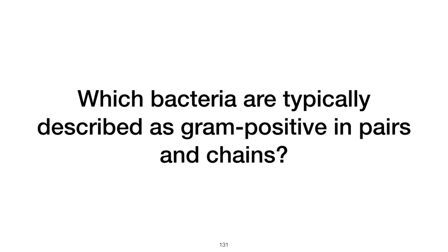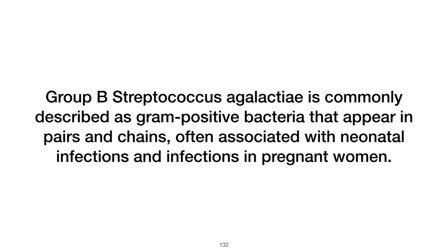Which bacteria are typically described as gram-positive in pairs and chains? Group B Streptococcus agalactiae is commonly described as gram-positive bacteria that appear in pairs and chains, often associated with neonatal infections and infections in pregnant women.